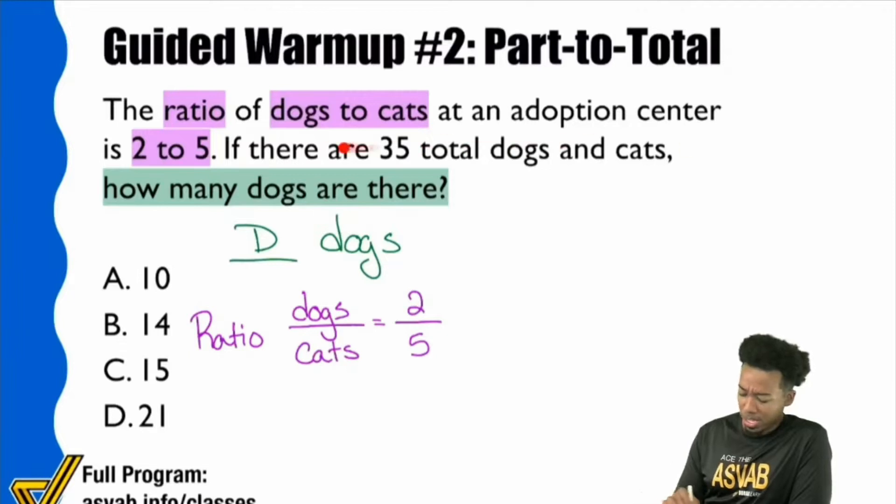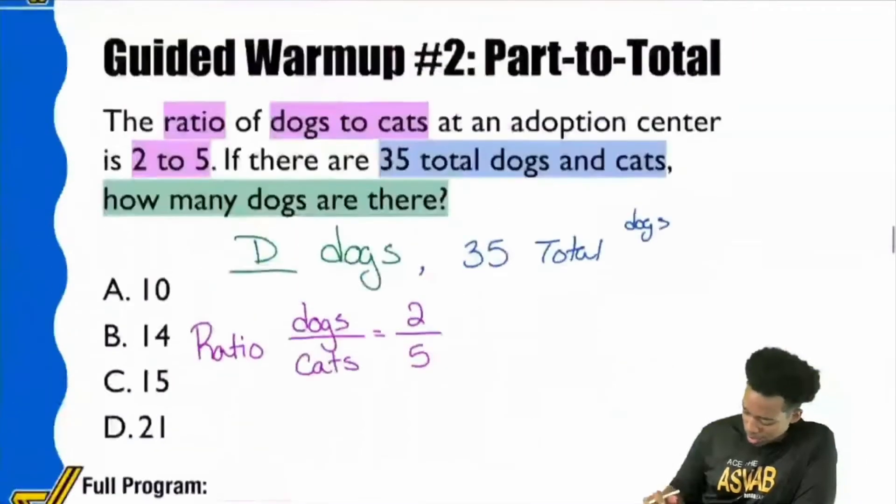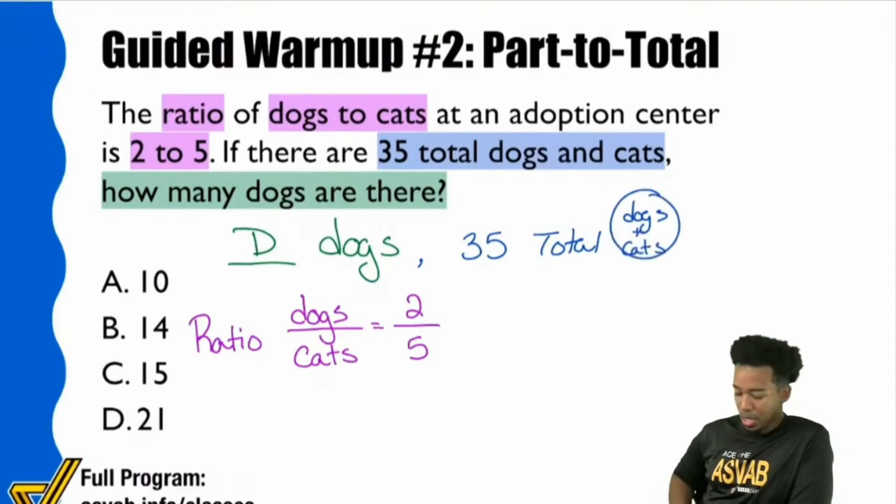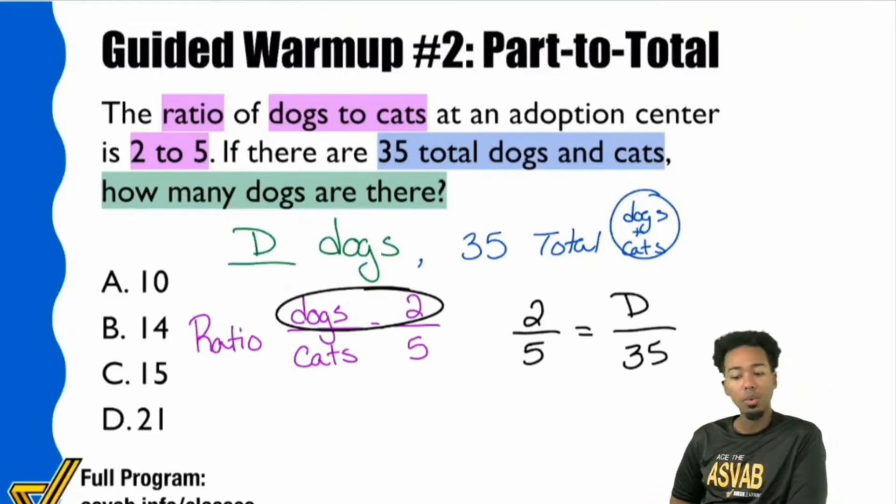Now let's move forward and write down this one last piece that we didn't write down yet. Right here, it says there are 35 total dogs and cats. So I'm going to write that over here. So we have D dogs and then 35 total dogs and cats. OK, so let's think about this. Everybody, could I write a ratio like this? Could I say two over five equals, so two is dogs, so I could put D for dogs and then 35 down there. Would that work? Is this a proper proportion?